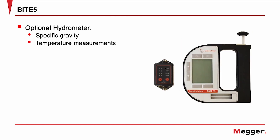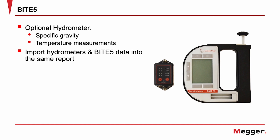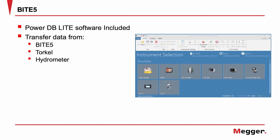The Byte 5 offers an optional hydrometer as well. Take specific gravity and temperature measurements of flooded cells, then import the hydrometer data into the Byte 5 report. The included PowerDB Lite software allows you to transfer data from the Byte 5, the Torcal, and the hydrometer.